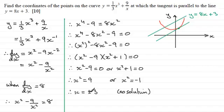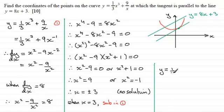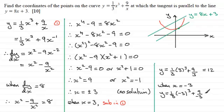So now we've got that x equals plus or minus 3, we just need to find the corresponding y values. So we can say that when x equals 3, if we substitute this up into this equation here, let's just call that equation 1, and we can say sub in 1, then we find that y equals one-third multiplied by x cubed, so x was 3, 3 cubed plus 9 divided by 3. And if you work this out you end up with 12.